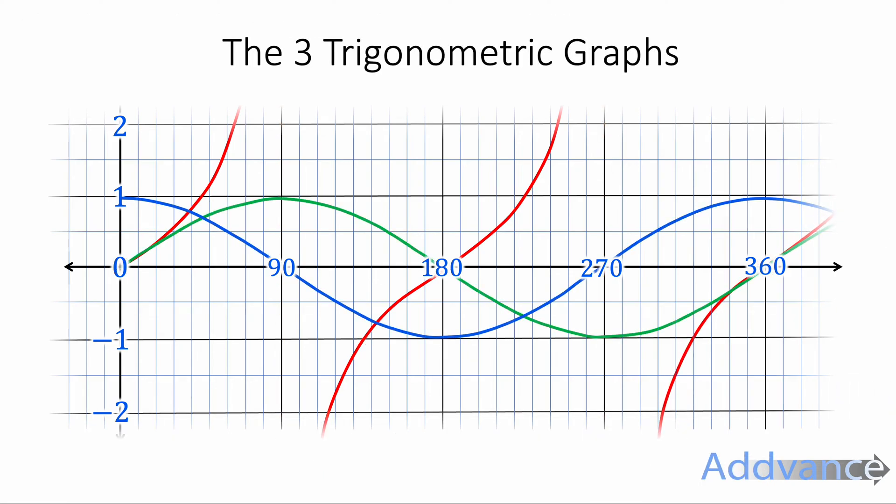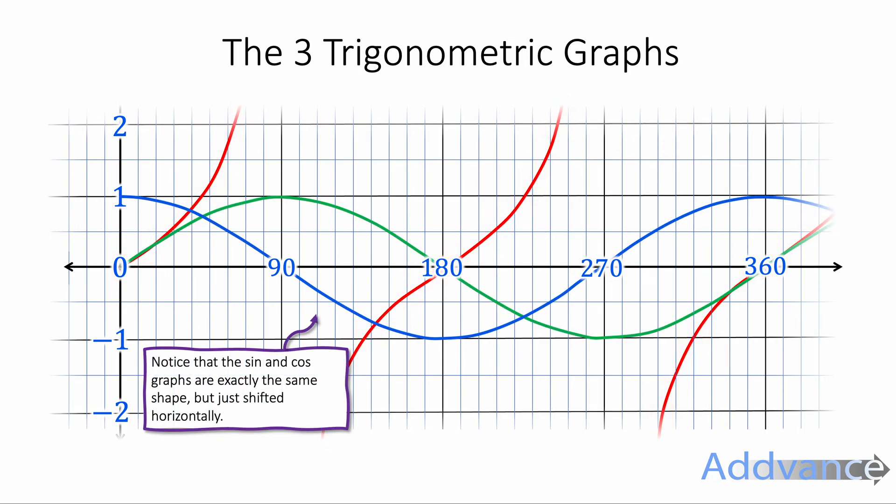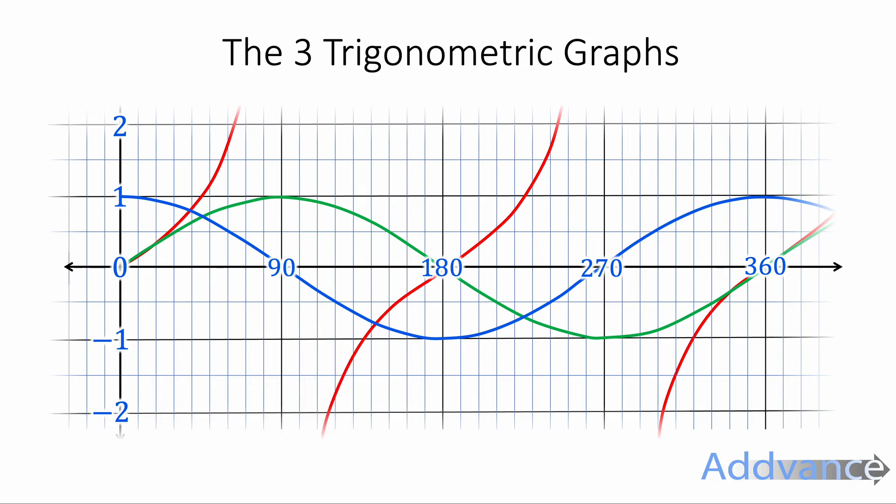Our three graphs are the sin of x graph, which looks a bit like an s to me. So remember the sin of x graph looks like an s. I have the cos of x graph, and I have the tan of x graph. Notice that the sin and cos graphs are exactly the same shape, but shifted horizontally. They just shifted side to side a little bit, but they are the same shape. The tan of x graph is a completely different shape. It's the odd one out.